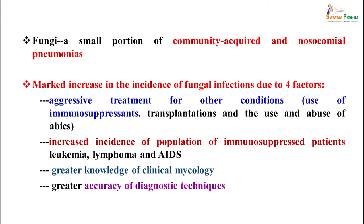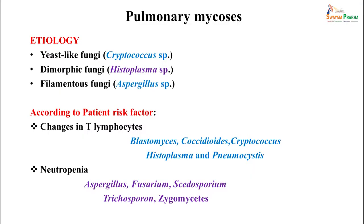There is now greater knowledge of clinical mycology and better accuracy in diagnosis, so these infections are found more often. Increased average lifespan means more elderly-associated diseases with more ICU stays, where fungal infections are more common. The causative fungi can be yeast-like fungi like Cryptococcus, dimorphic fungi like Histoplasma, or filamentous fungi like Aspergillus. Patients with T-lymphocyte changes are prone to Blastomyces, Coccidioides, Cryptococcus, Histoplasma, and Pneumocystis, while neutropenic patients are more prone to Aspergillus and other hyaline hyphae.